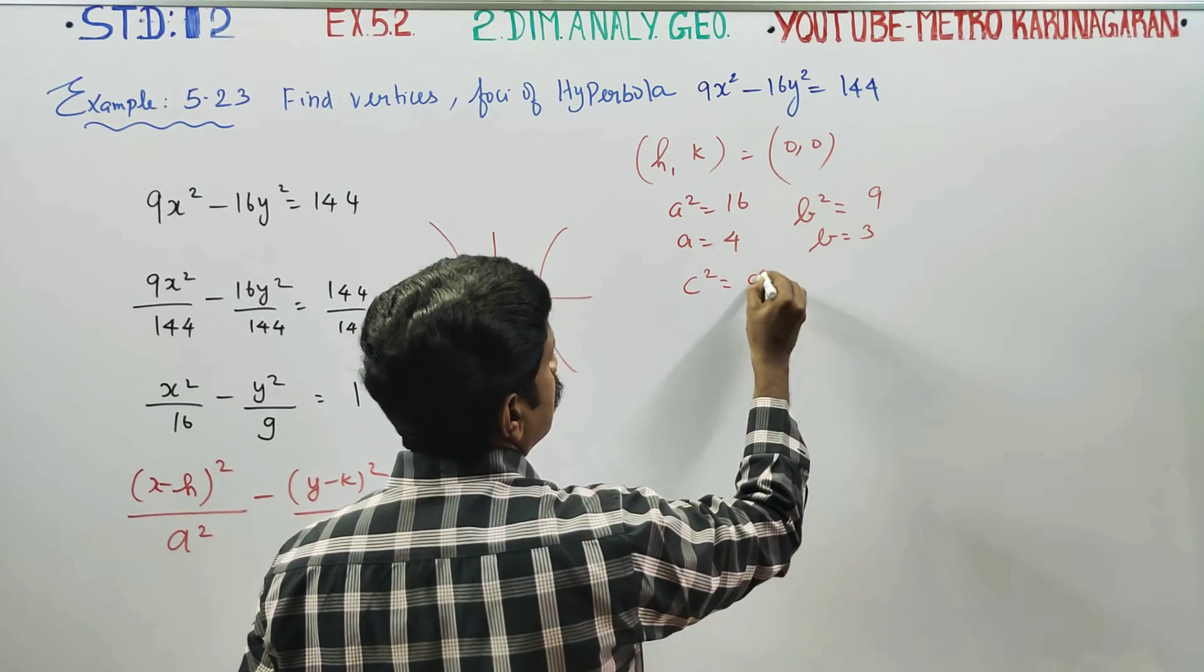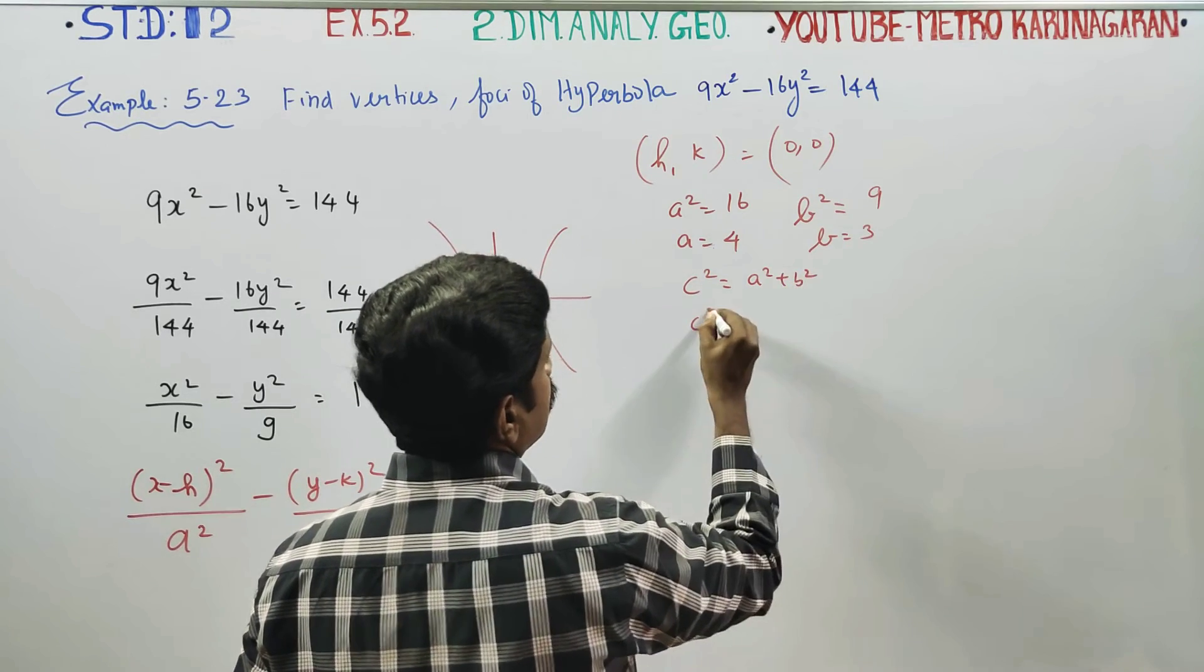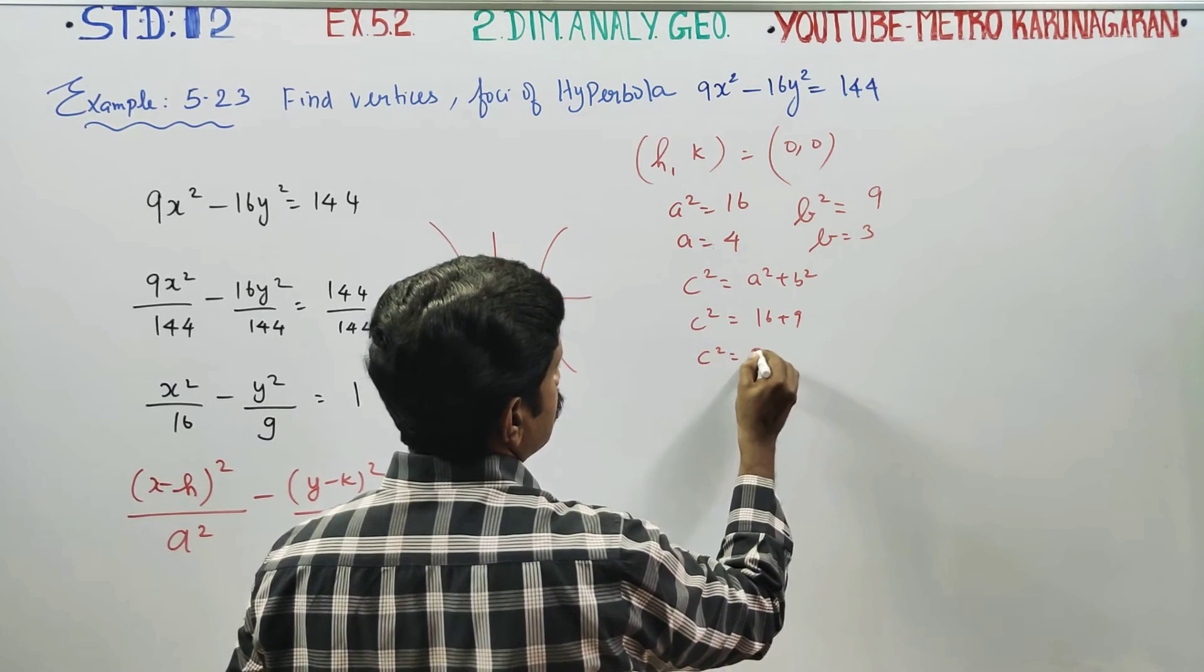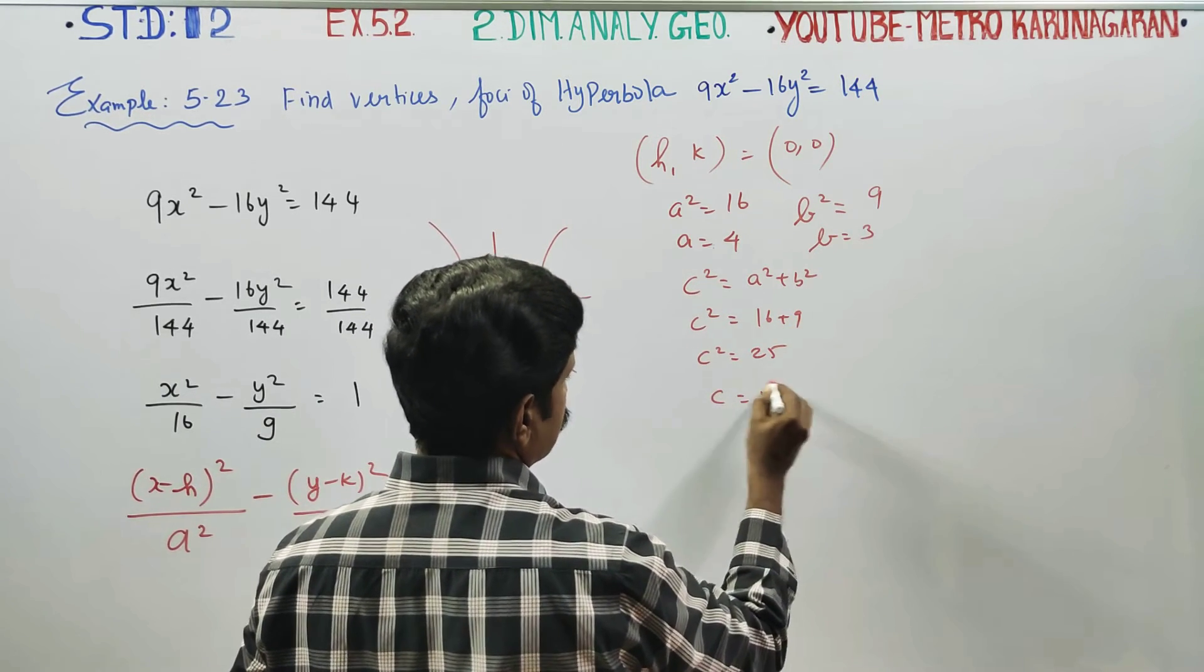c² equals a² plus b². Now c² equals 16 plus 9. c² equals 25, so c equals 5.